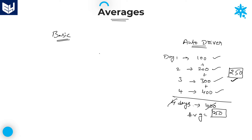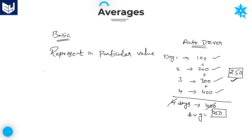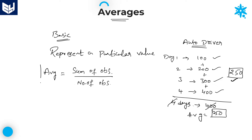So, first of all, why we are finding the average is: in order to represent a group with a single particular value, we are finding the average. In general, the basic formula for average is: average = sum of observations divided by number of observations.